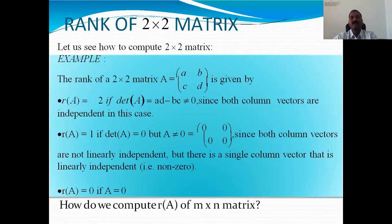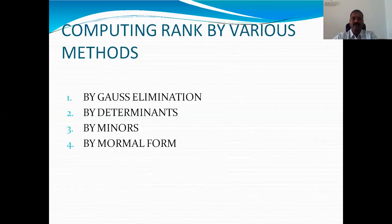Now the question is: given a general M by N matrix, how do we compute its rank? These are the various methods: one, by Gauss elimination; two, by determinants; three, by minors; four, by normal form.